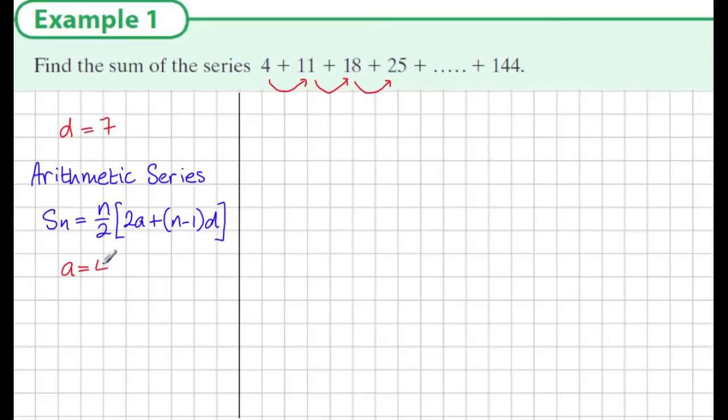Now the first term a we see is 4, d we know is 7. We need to know what n is in this formula as well, but we don't know what n is. We do however know that term n, the last term here, is equal to 144.